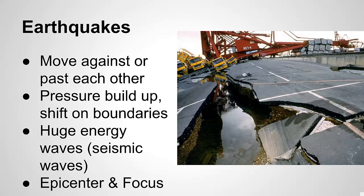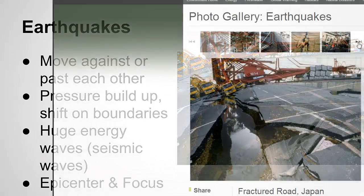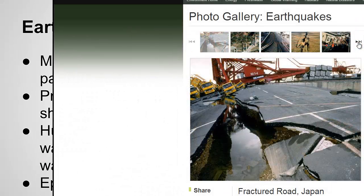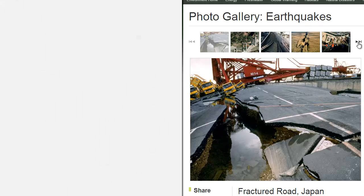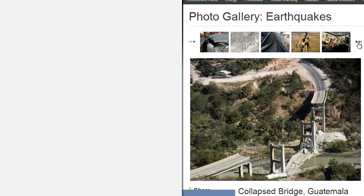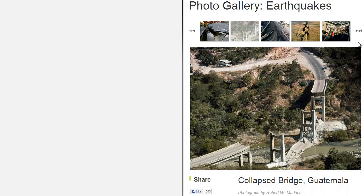Now we're going to talk about some of the results of plate tectonics, starting with earthquakes. Earthquakes form when the plate boundaries move against each other or past each other. Pressure can build up and then cause a sudden shift, usually along those plate boundaries.